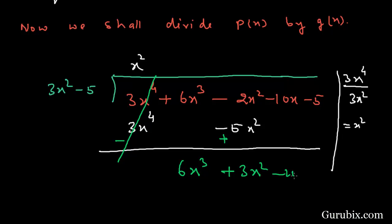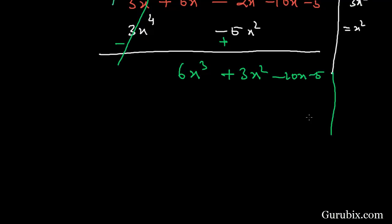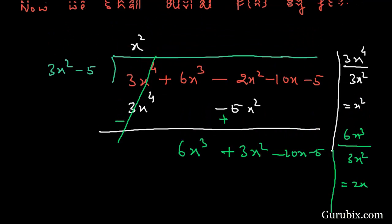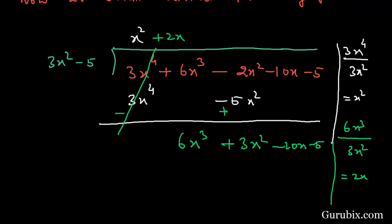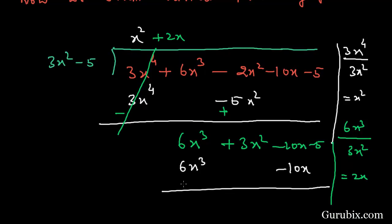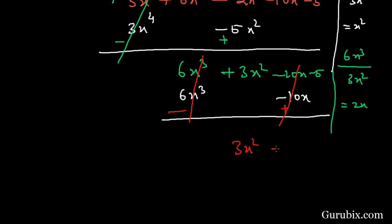We bring down -10x and -5. The next term in the quotient is found by dividing 6x³ by 3x², giving 2x. Multiplying 2x by (3x² - 5) gives 6x³ - 10x. We change signs; both terms cancel, leaving 3x² - 5.